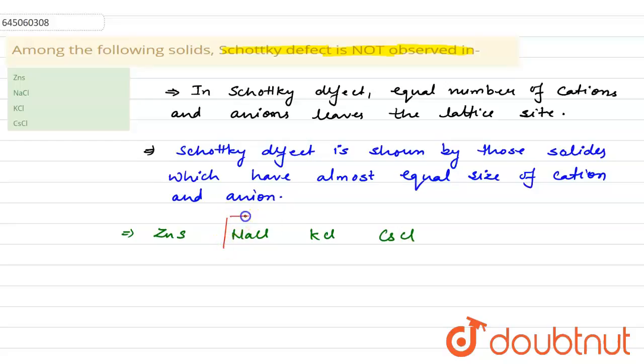Out of these, these three have almost similar size of cation and anion.